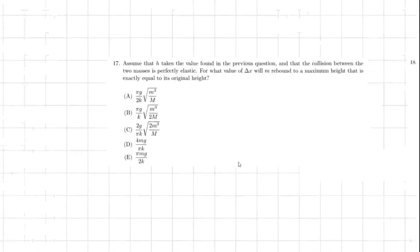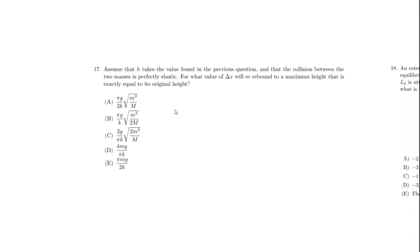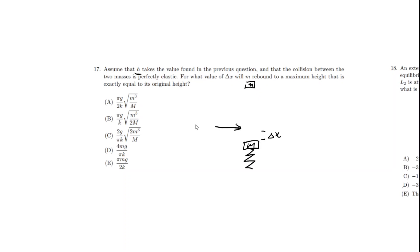Number 17 is our first one. It's actually the second part of a two-part problem, but the first part was not very interesting, so I'm just going to tell you what it was about. The height H found in the previous question is the height H so that if the mass is displaced by delta X from equilibrium and the mass M is here, and then they're released at the same time, the collision occurs at the equilibrium point.